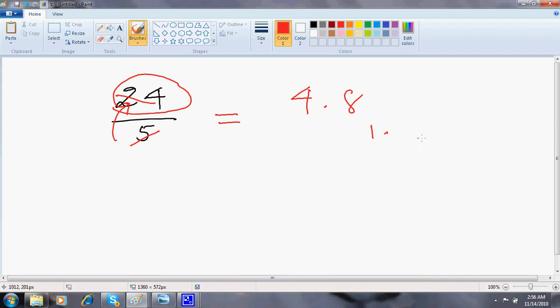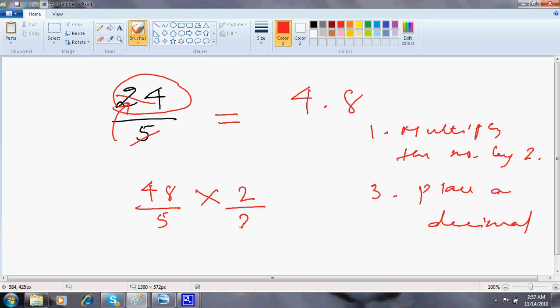So the rule could be like, multiply the number by 2, then place a decimal. For example, if you have 48 by 5. I'm just giving you the proof of this also if you require. What I'm doing is I'm multiplying and dividing by 2. So this one goes off as 10. And this upper part becomes 96 by 10. Anything by 10 is just a decimal. So it's 9.6.